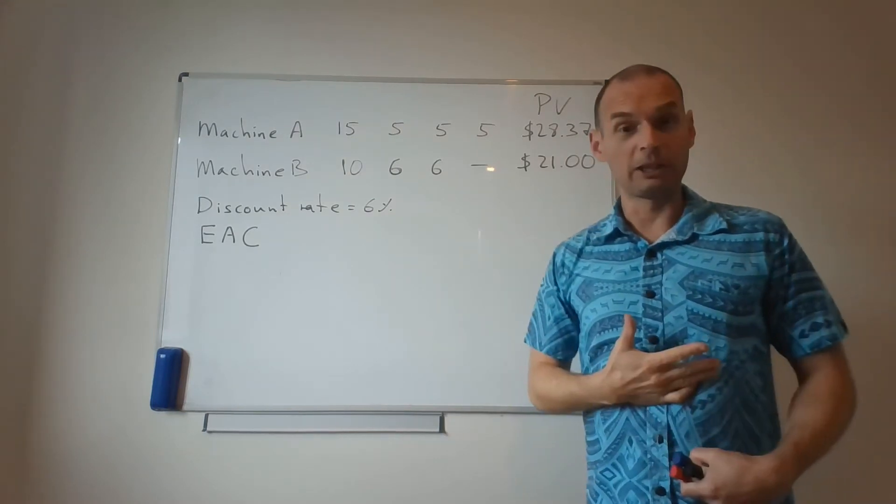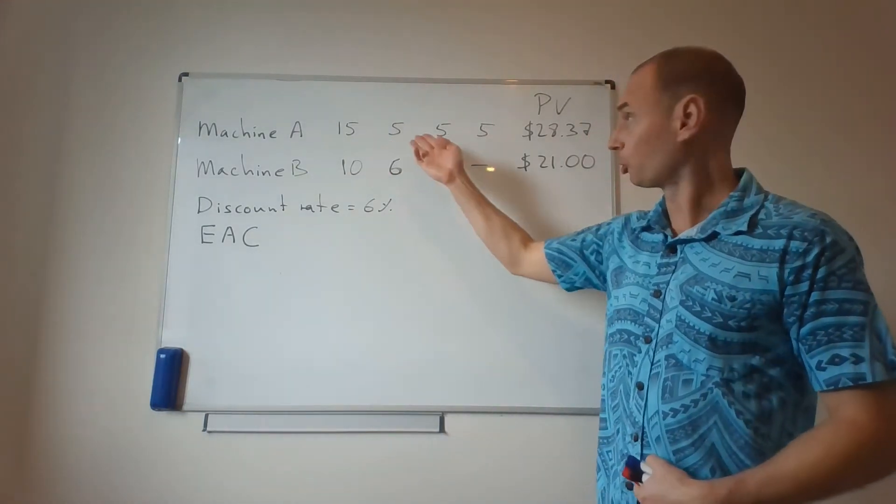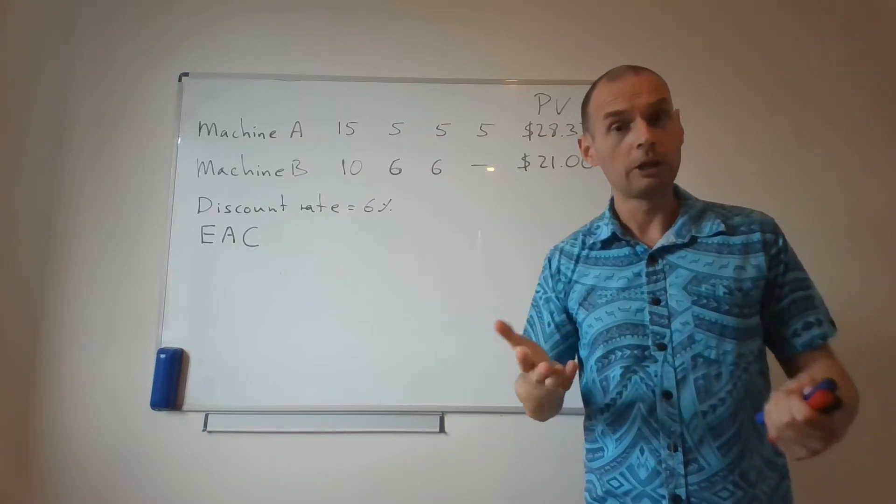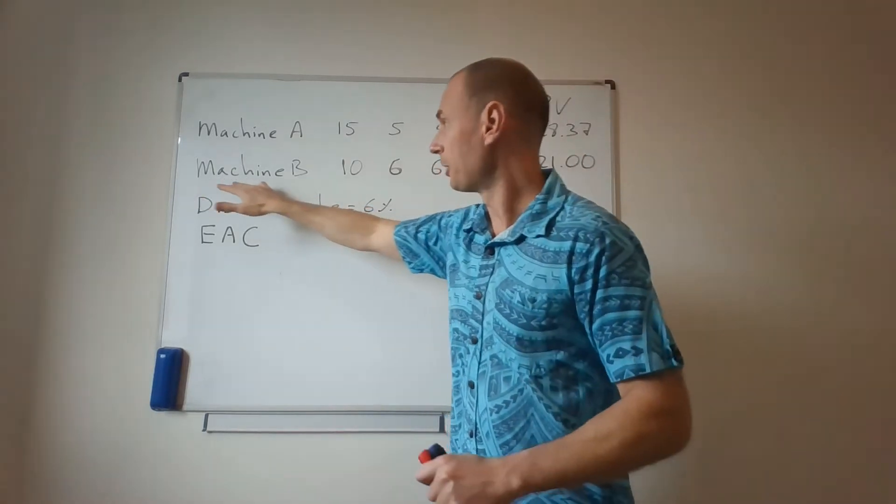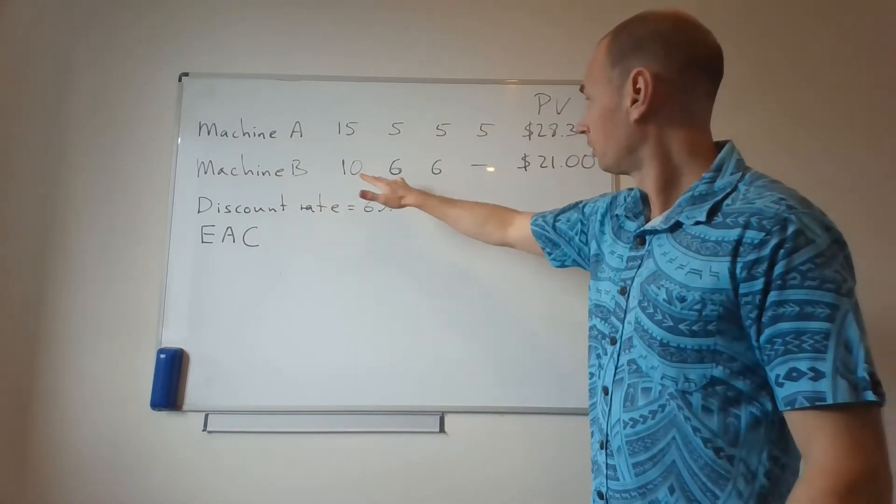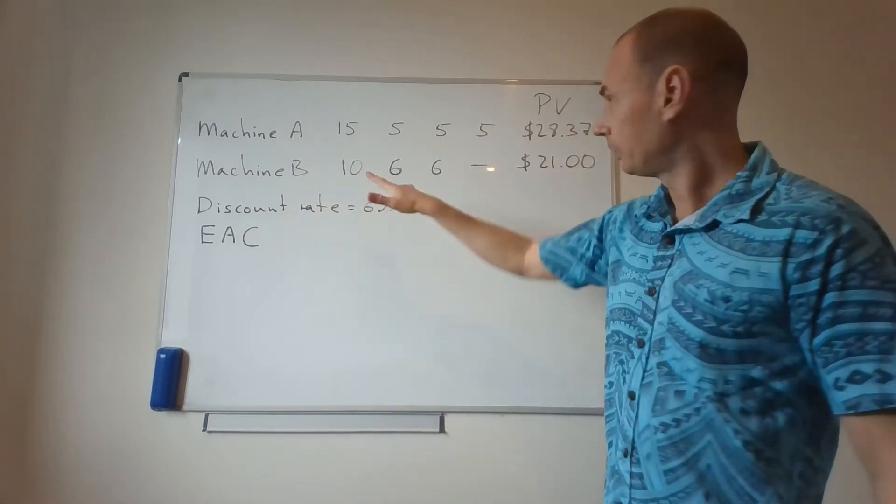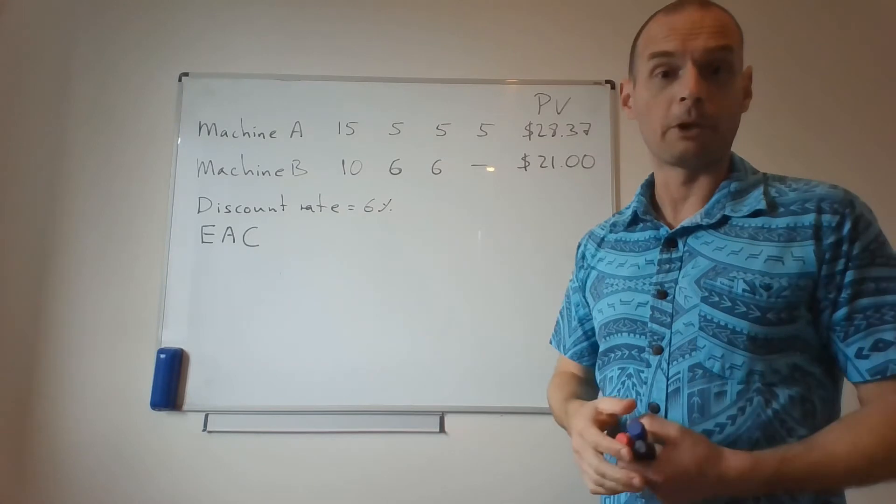If the equivalent annual cost for Machine A, if the cost of rental year-on-year-on-year is lower, I go with Machine A. If Machine B, the cost of rental year-on-year is lower, I go with Machine B.